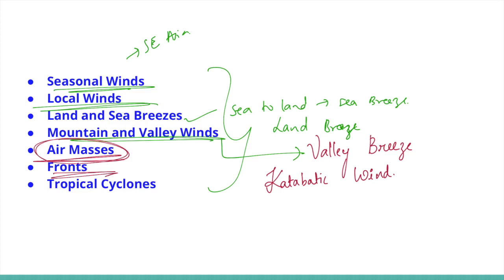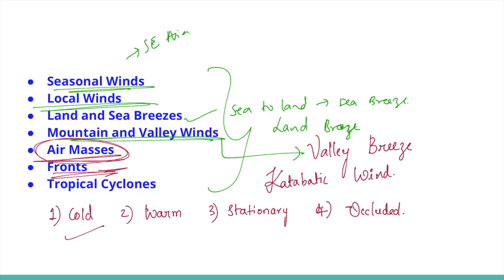When two different air masses meet, the boundary zone between them is called a front. The process of formation of fronts is known as frontogenesis. There are four types of fronts: cold, warm, stationary, and occluded. When a front remains stationary, it is called a stationary front. When cold air moves towards a warm air mass, the contact zone is a cold front. If warm air moves towards a cold air mass, it is a warm front. If an air mass is fully lifted above the land surface, it is called an occluded front. Fronts occur in the middle latitudes, characterized by steep gradients in temperature and pressure, and bring abrupt temperature changes, rising air, cloud formation, and precipitation.